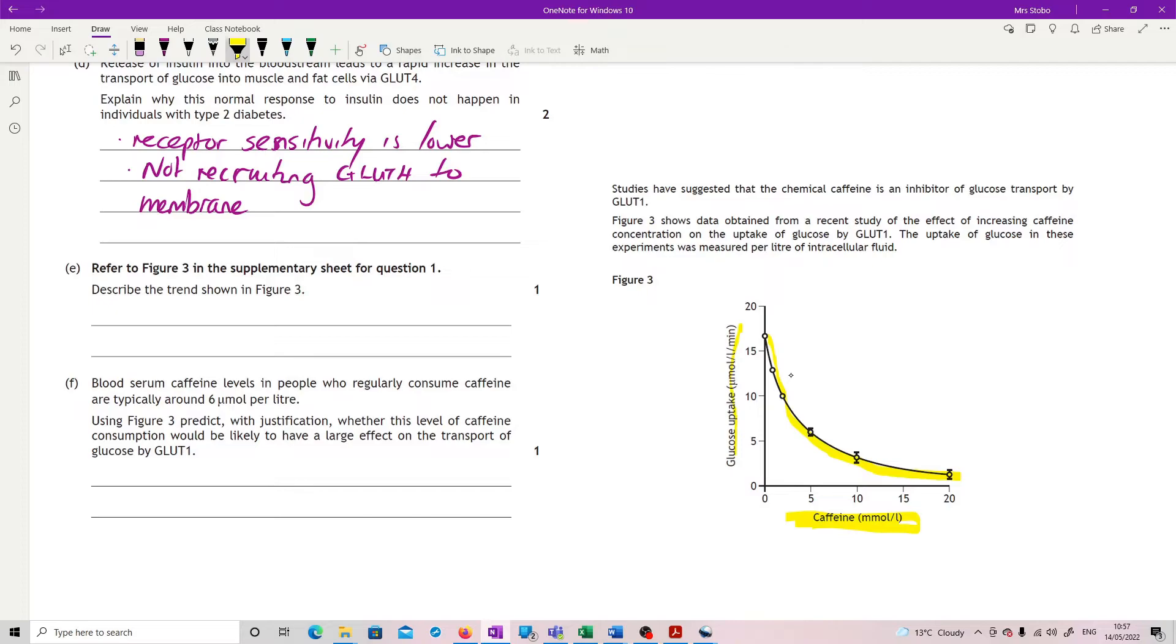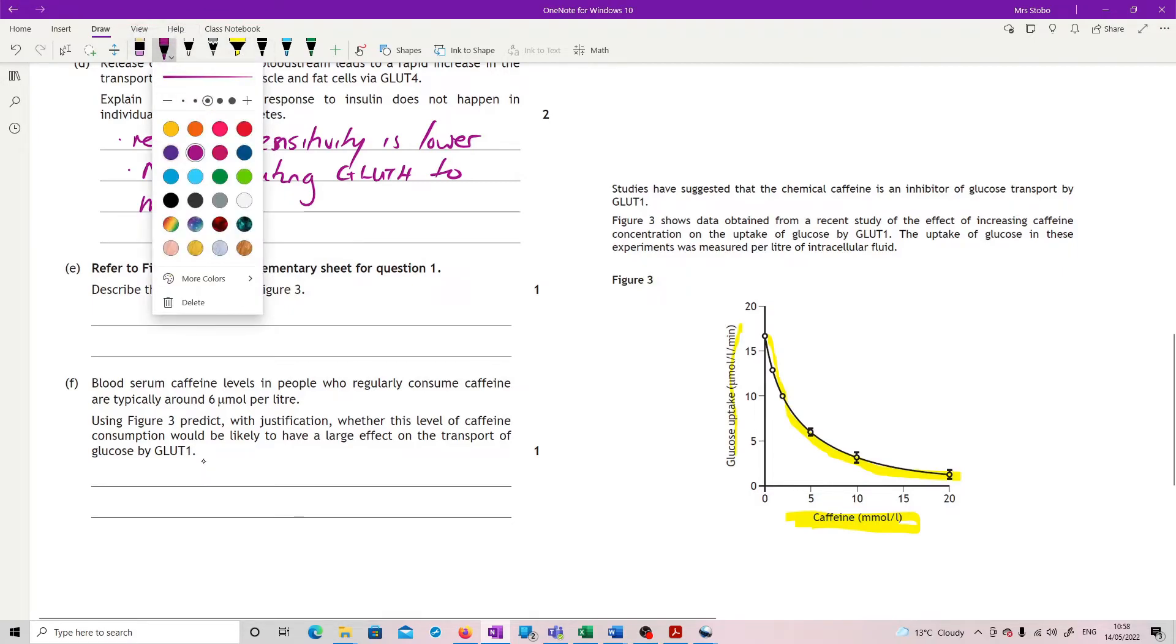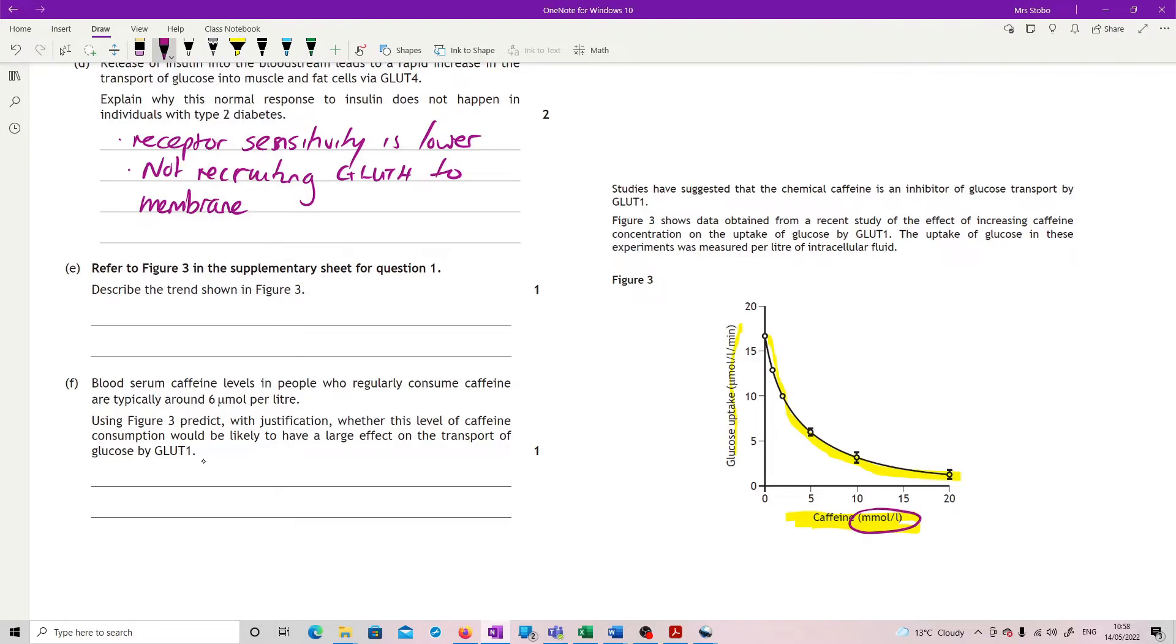Blood serum caffeine levels in people who regularly consume caffeine are typically around six micromoles per liter. Using Figure 3, predict with justification whether this level of caffeine consumption would be likely to have a large effect on the transport of glucose by GLUT1. Now this was a couple of sneaky ones in this question, because if you look here, caffeine is in millimoles per liter and they are talking about micromoles per liter.